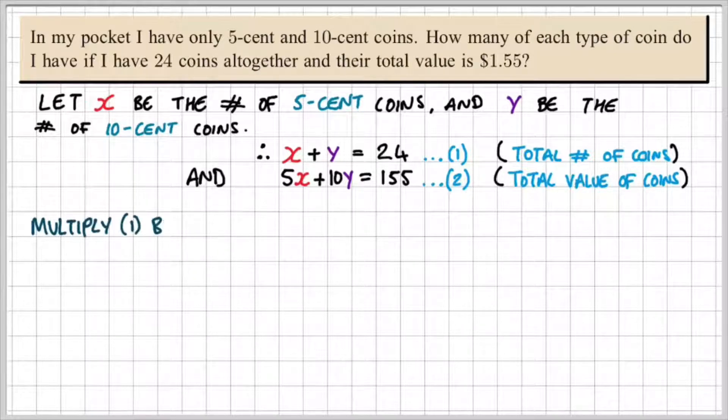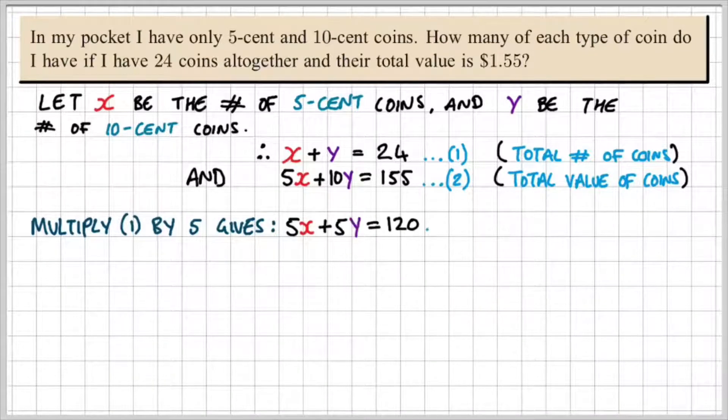Okay, so what we can do is we can multiply equation 1 by 5, which will give us 5x plus 5y is equal to 120. We can label that equation 3.